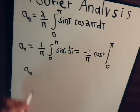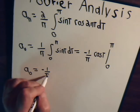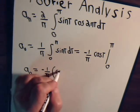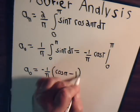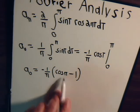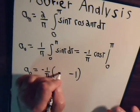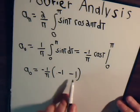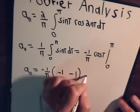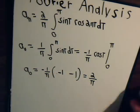So a sub 0 equals minus 1 over π times the cosine of π minus the cosine of 0. That's 1 and this is negative 1. So negative 1 minus 1, this expression is negative 2, so that will become plus 2 over π.